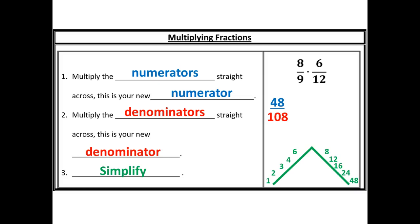I start with my biggest factor, 48, and divide until I get a whole number. 108 divided by 48 gives me a decimal. Divide by 24 gives me a decimal. Divide by 16 gives me a decimal. Divide by 12 gives me a whole number — the greatest common factor here is 12. I'm going to divide top by 12, bottom by 12. My simplified final answer is 4 ninths.